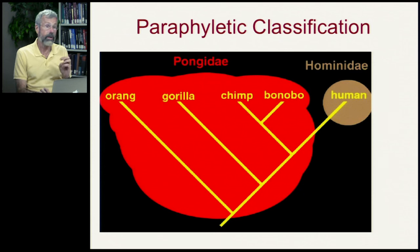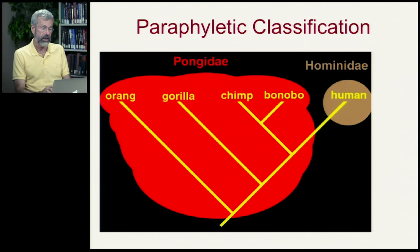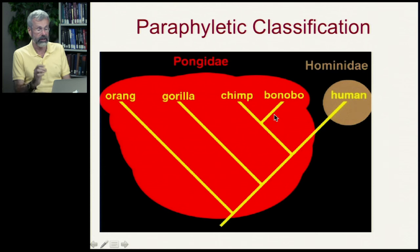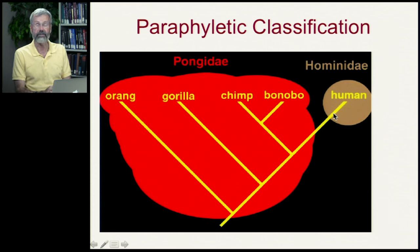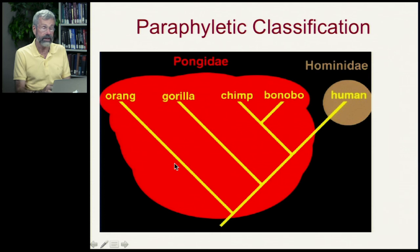First is a good example of a paraphyletic classification — one that's incomplete because it doesn't include all descendants. As we've seen from the classification of the primates, the apes include the orangs, the gorillas, the chimps, there's a fourth great ape called bonobos, and there's another species here — us. Our closest relatives are the chimpanzees, and yet we're not included in the term Pongidae traditionally.